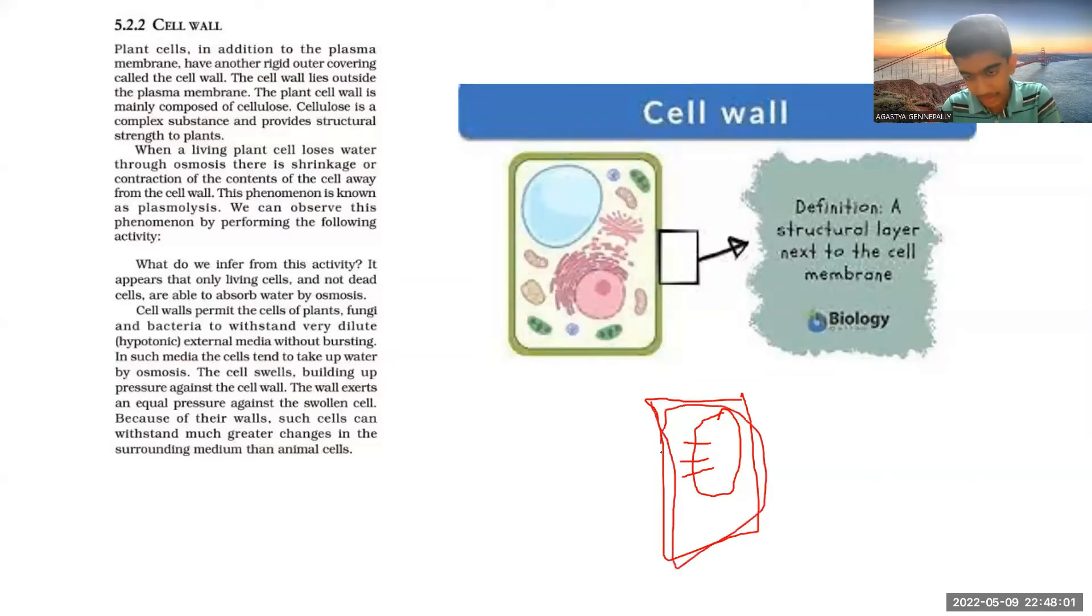But the cell wall is so rigid that it wouldn't burst like how it happens in animal cells with the cell membrane. The cell wall exerts the same pressure. Whatever pressure you apply, you wouldn't burst. The pressure is equal, so we wouldn't burst. That is the intent.